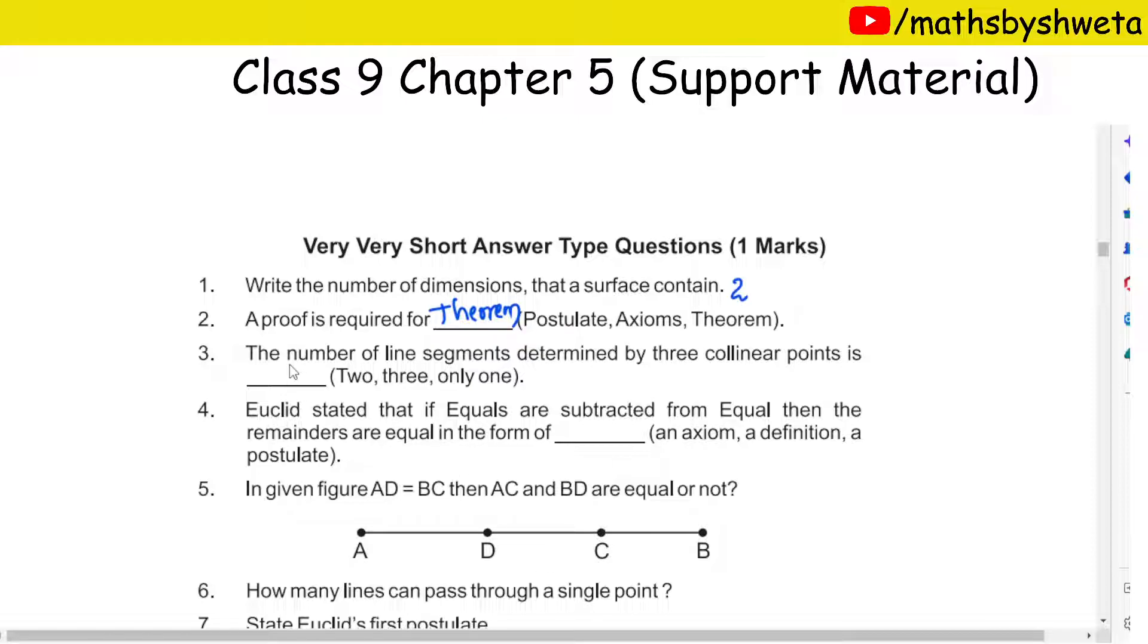Theorems. What is the next question? The number of lines determined by three collinear points: 2, 3, and only 1. Collinear points - these are the points which are in one line, like A, B, C. But if I say here A, B, C, this is non-collinear points because it is not a line. So this is the answer: only one.